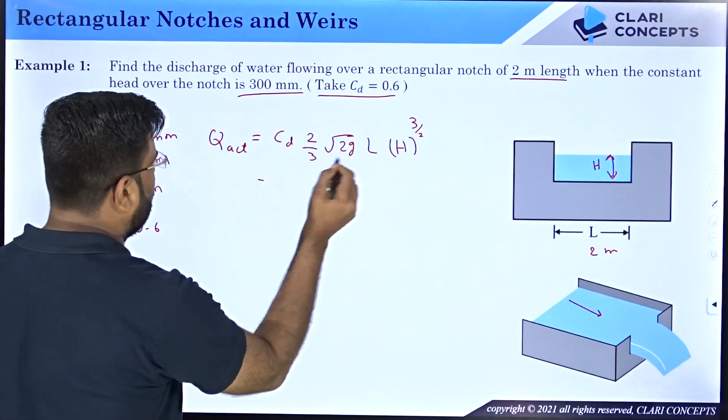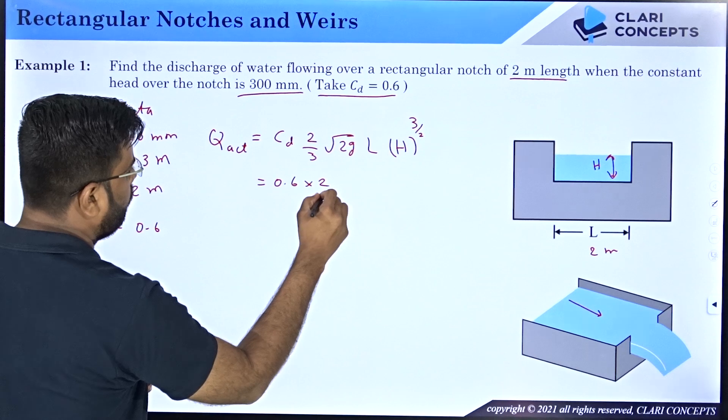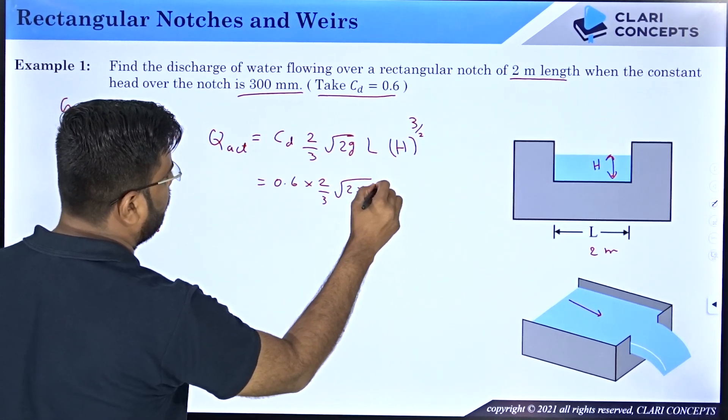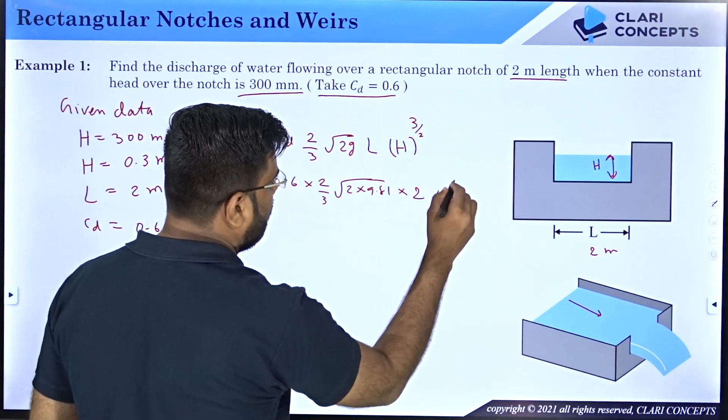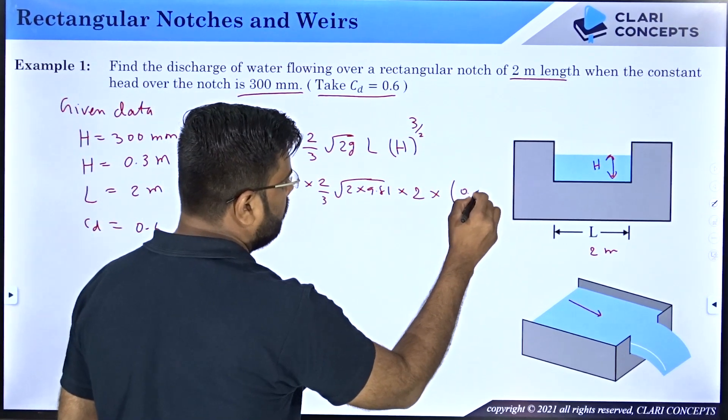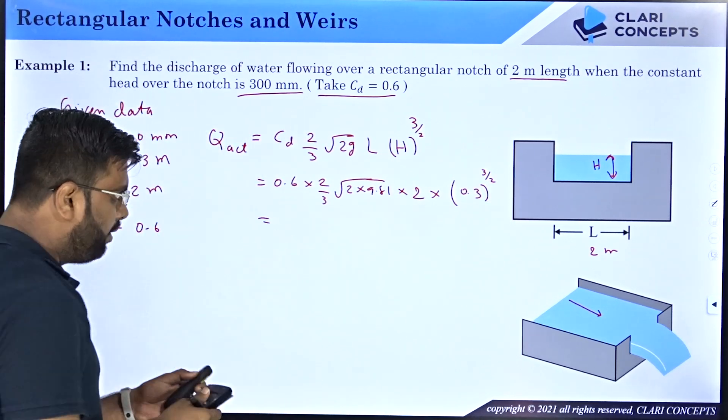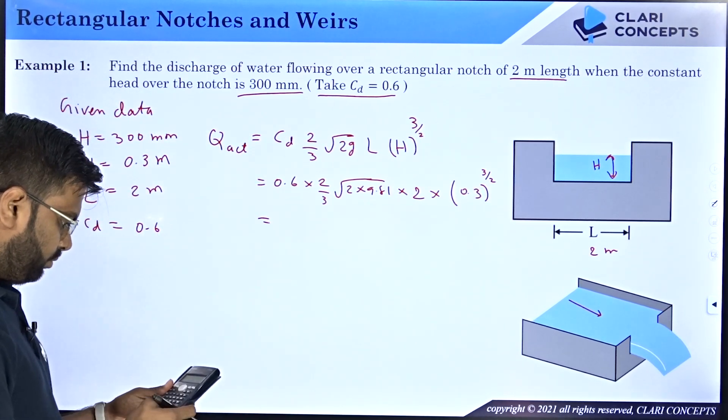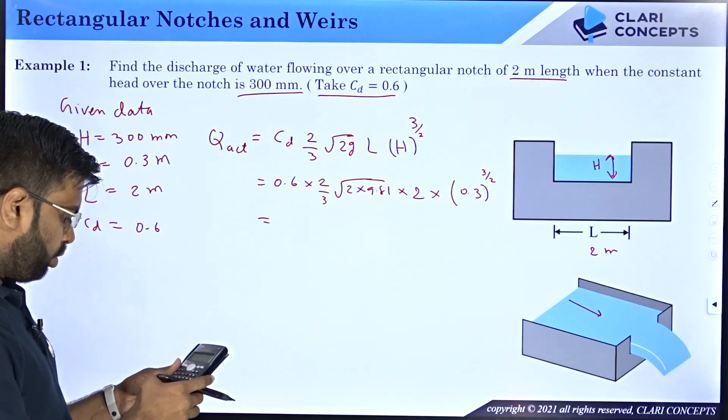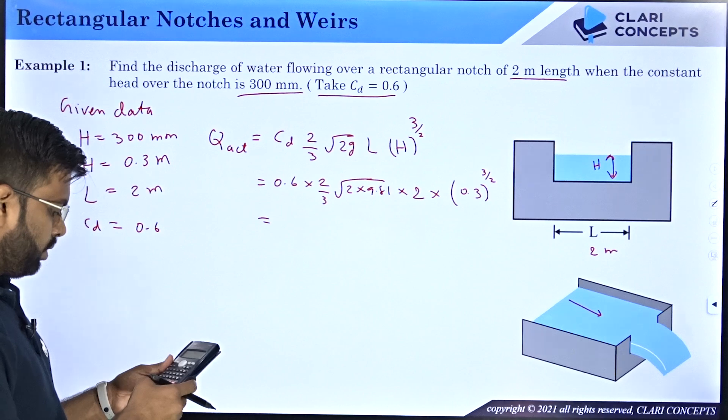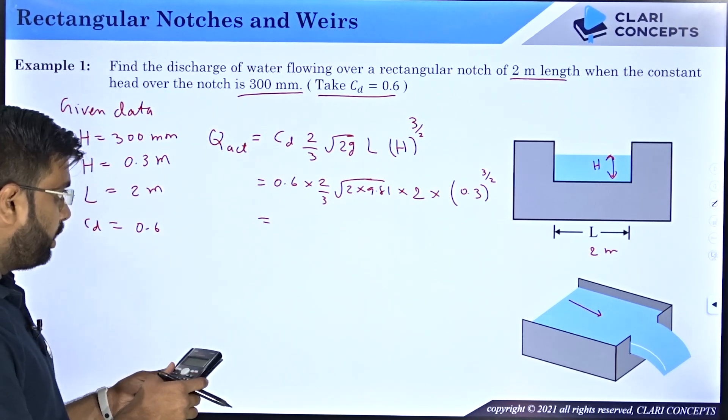So let us put all the values because we have all the values over here. CD is 0.6 into 2 by 3 into under root 2 into 9.81 which is the value of G, length is 2 meters and H is 0.3 raise to 3 by 2. So I will calculate the answer. It is 0.6 into 2 divided by 3 into under root of 2 into 9.81 into 2 into 0.3 raise to 3 by 2.